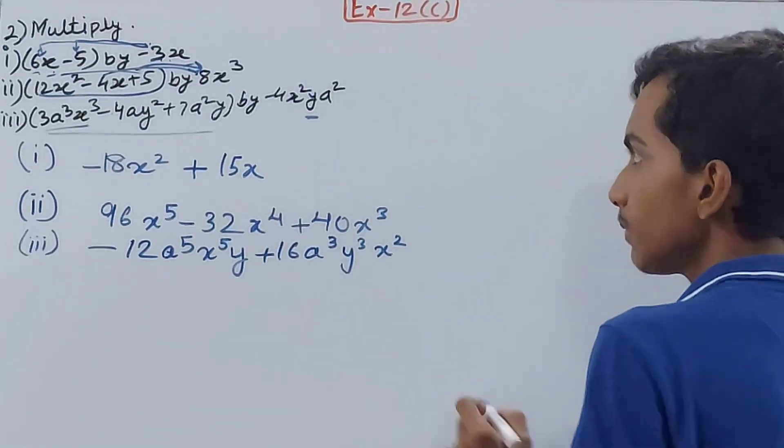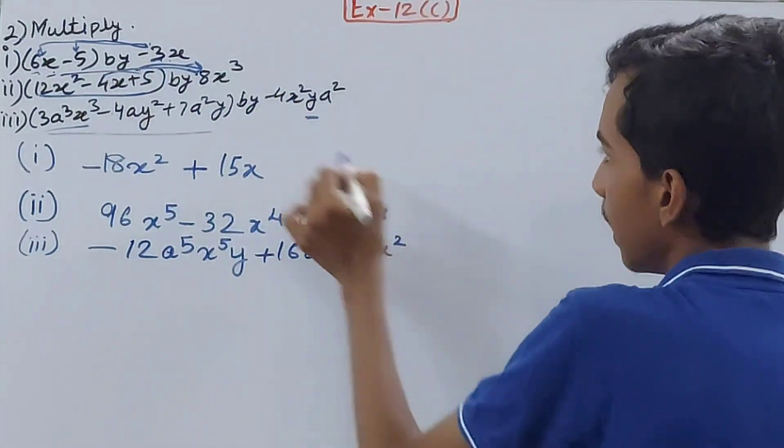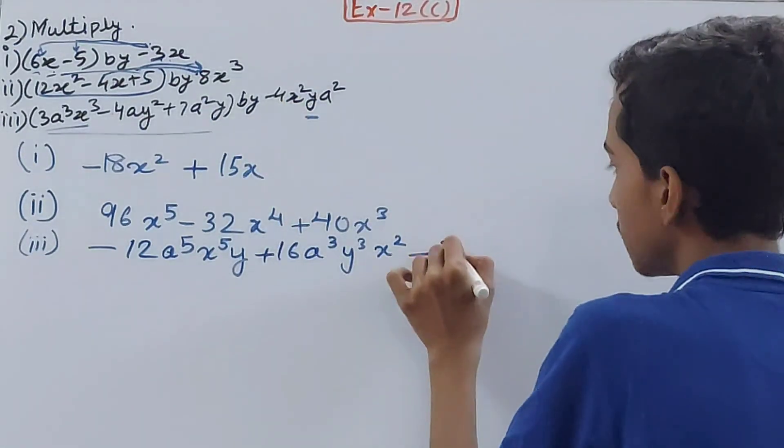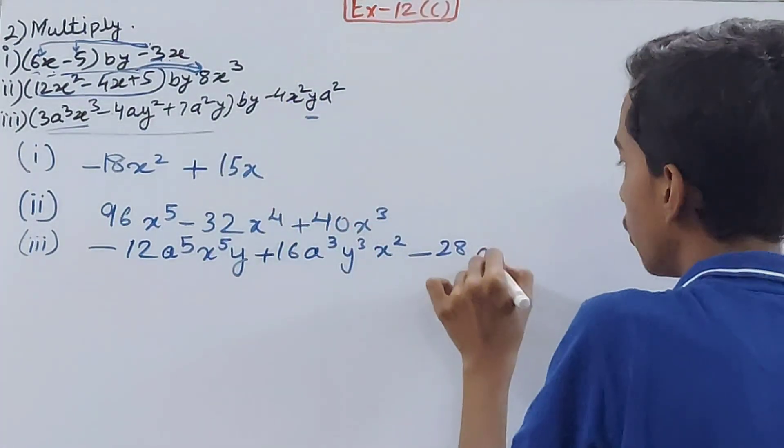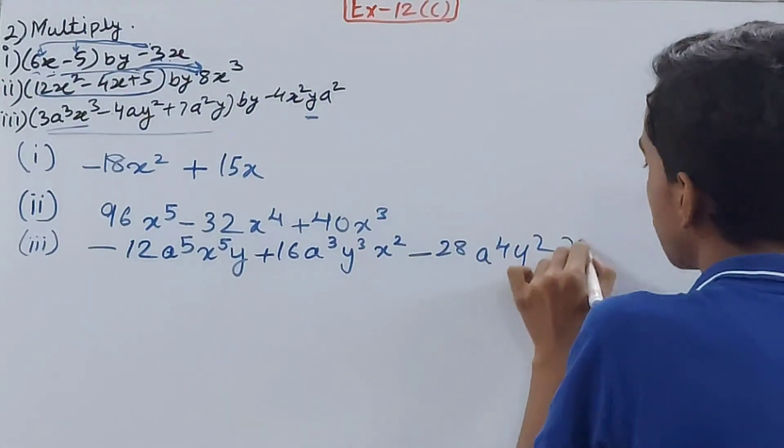Plus 7a²y times -4x²ya². Plus 7 into -4 is -28. a² times a² is a⁴. y into y is y². And x² here. That becomes the answer.